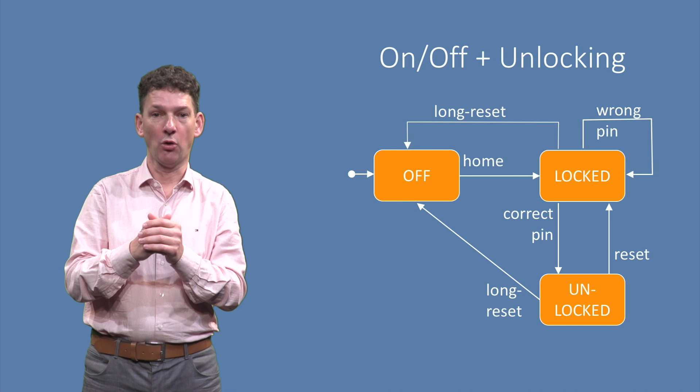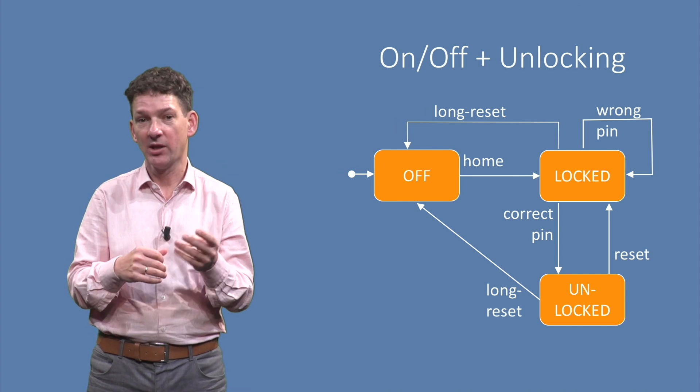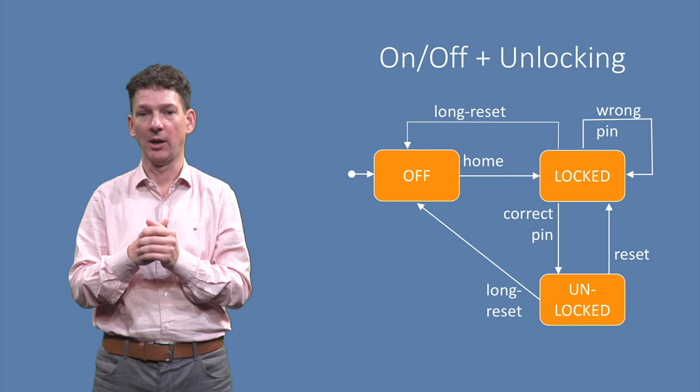The diagram has now become a little more complex, with three states, six transitions, and five different event types.